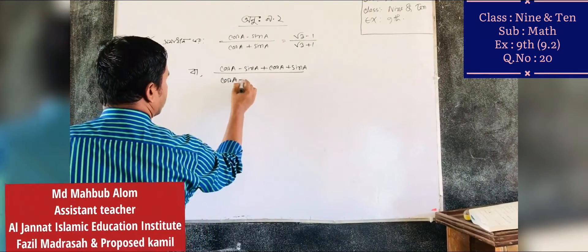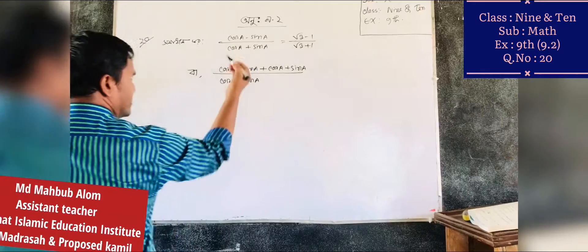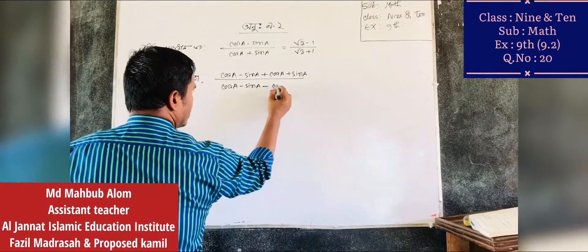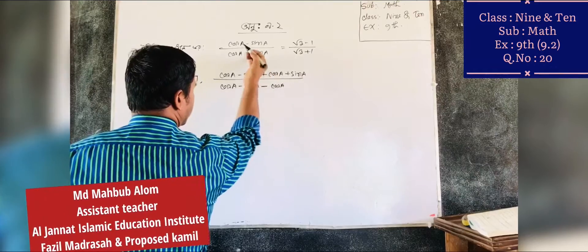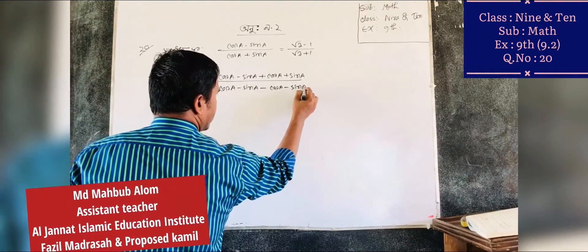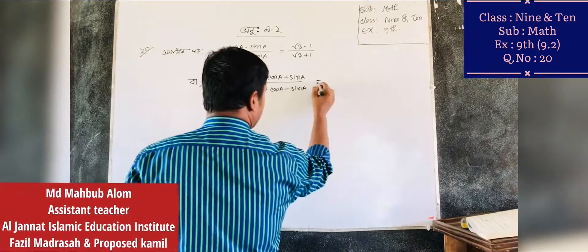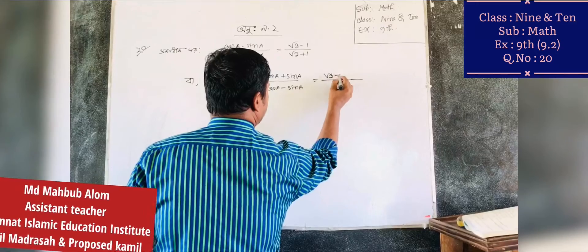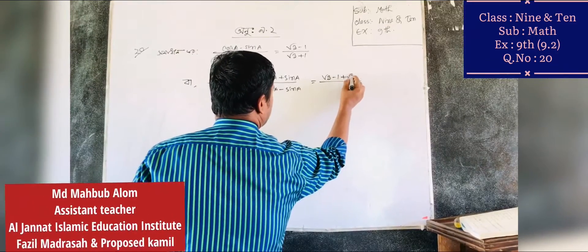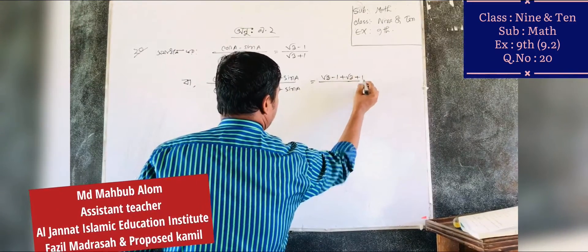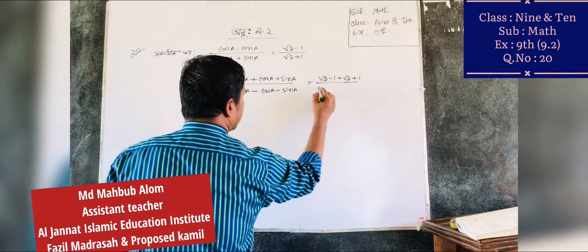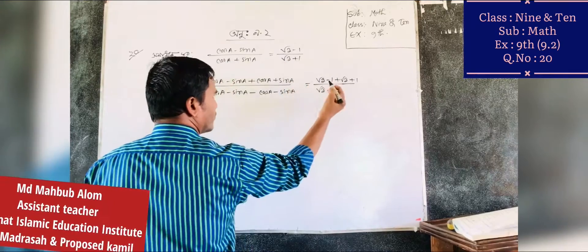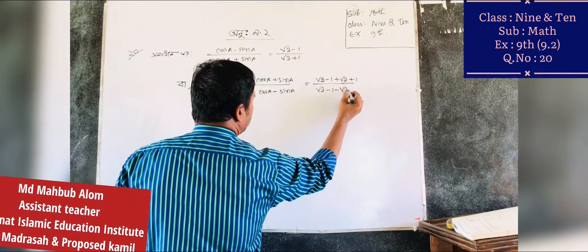Cos A minus sin A. As I put this one: from root 3 minus 1, plus root 3 plus 1. I want to get root 3 minus 1, minus root 3 minus 1.